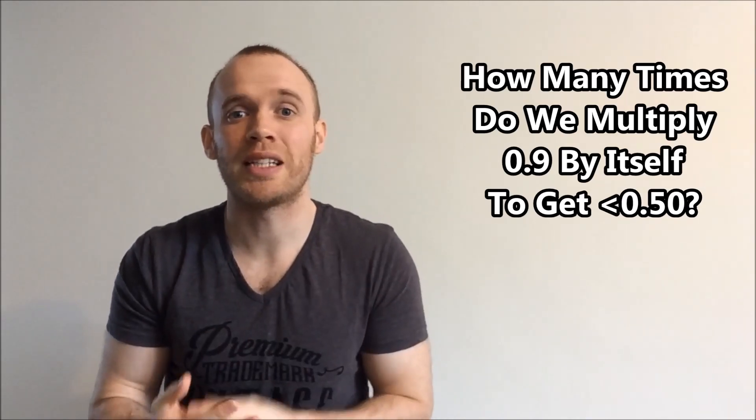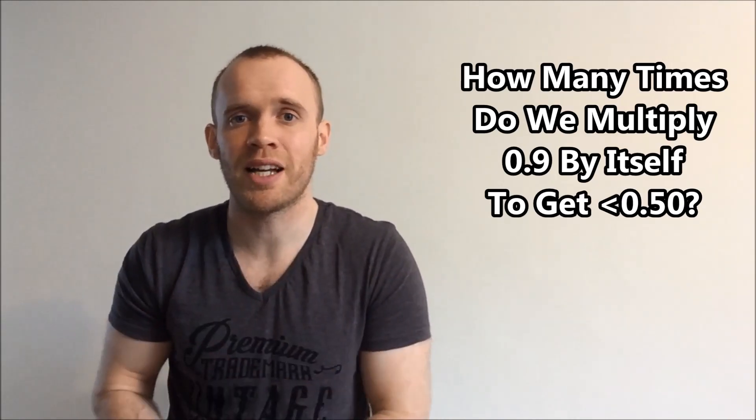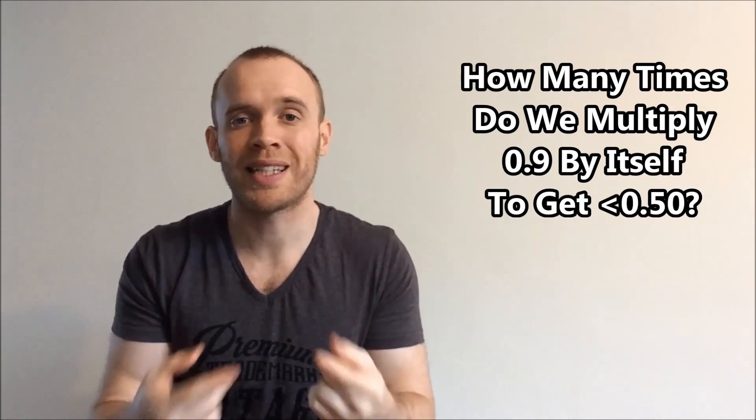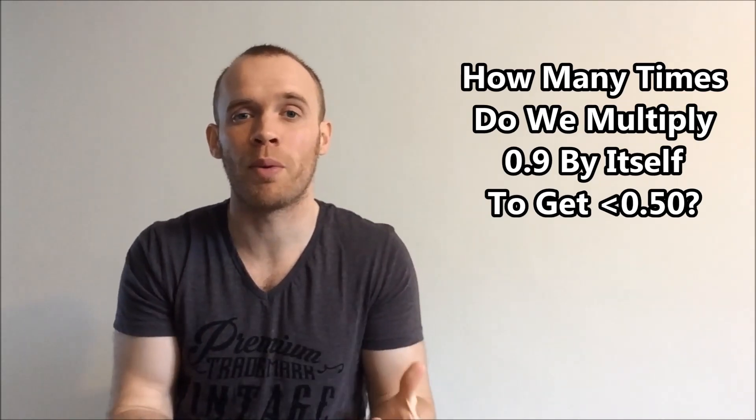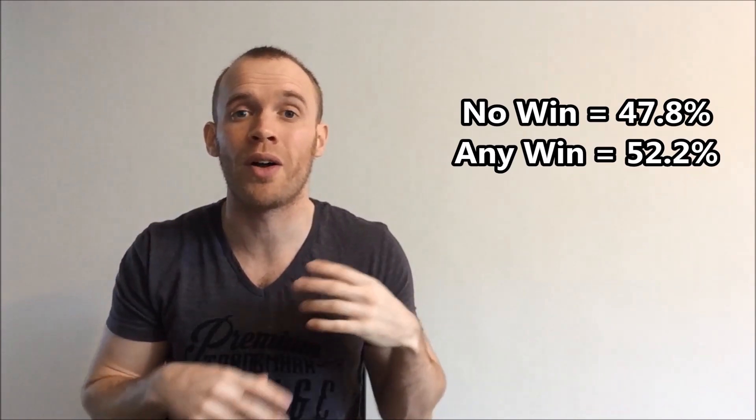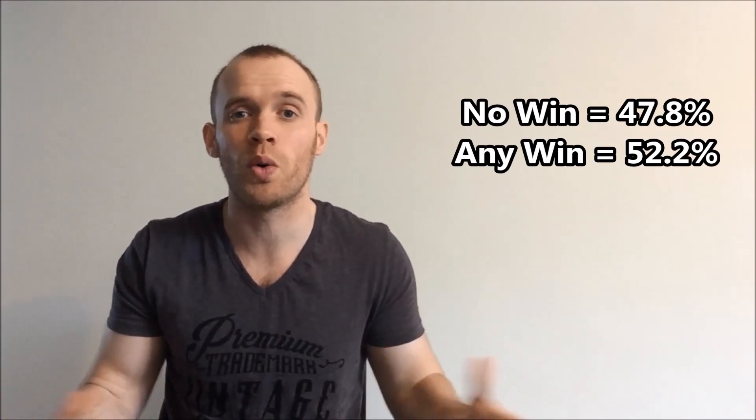So we have to see how many times we need to multiply 0.9 by itself before we get below 0.5, meaning that the opposite, the winning chance, is above 0.5, in other words, more than 50%. So let's do 3, 4, 5, 6, and the magic number is 7. After seven draws, we've passed the halfway point, and there's only a 47.8% chance that we don't win on any, and a 52.8% chance that we win on at least one or up to all seven draws.